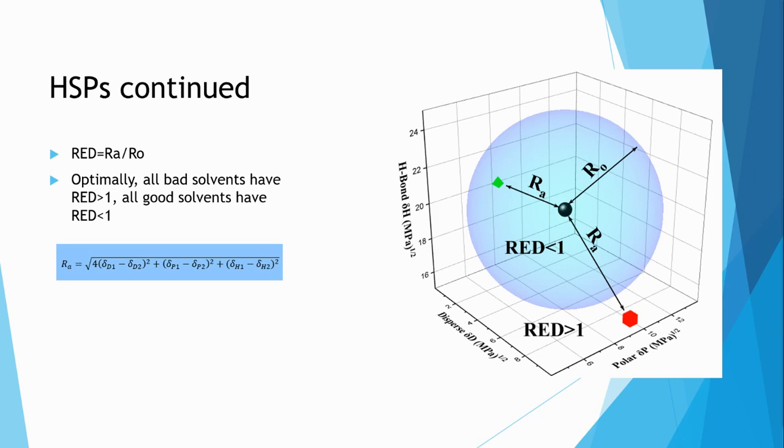all bad solvents will lay outside of the sphere and consequently will have a red greater than one, and all good solvents will lay inside of the sphere with a red less than one. This sphere model allows a distinctive line to be drawn in which species on one side are soluble and species on the other side are insoluble.